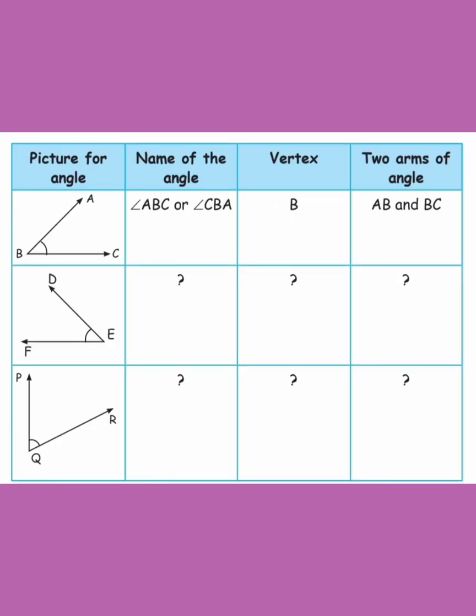If you look at the table, there is a picture of the angle, the name of the angle, the vertex, and the two arms of the angle. For angle A, B, C — B is the vertex in the middle, and A, B and B, C are the two arms.